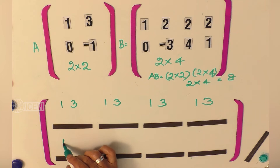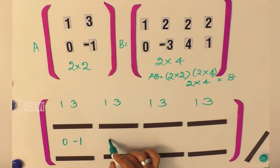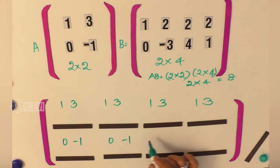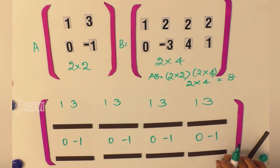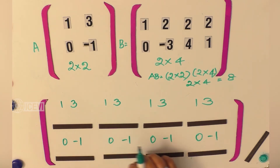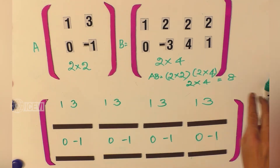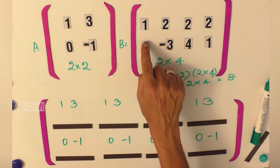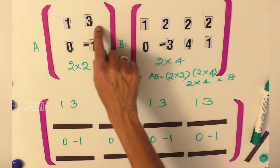So we put 0, minus 1 in all four places of the second row of the product matrix. Now we have to drag each column of matrix B across to matrix A.